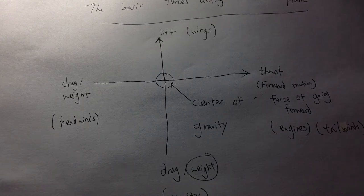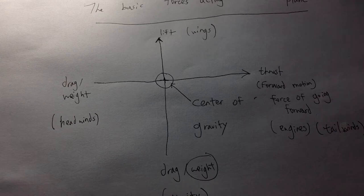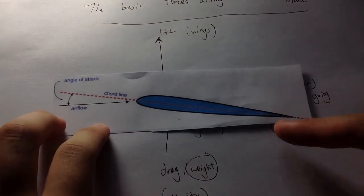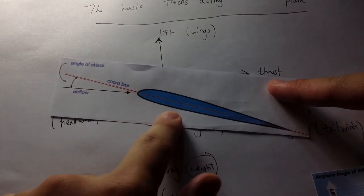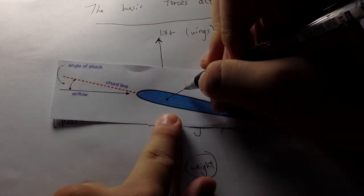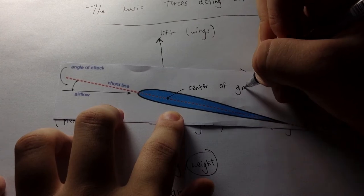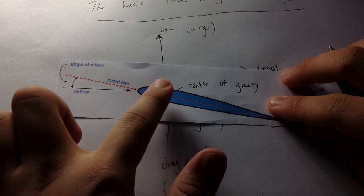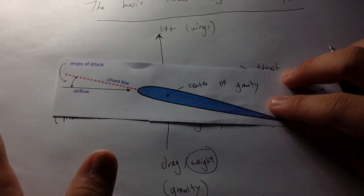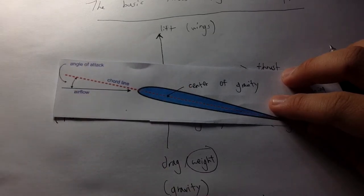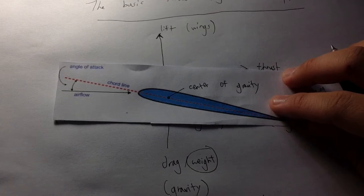So now, how does the plane actually fly? We're going to get into more parts of the plane. Have any of you wondered about the angle when the plane takes off? This is actually the chord line, and the center is called the center of gravity. The airflow and the angle between the airflow and the chord line is basically called the angle of attack, which calculates how much the plane lifts.